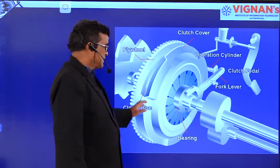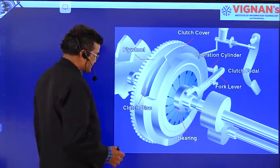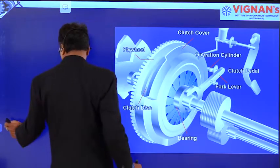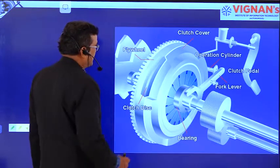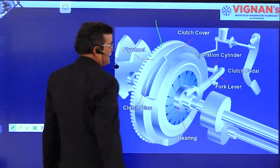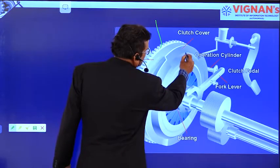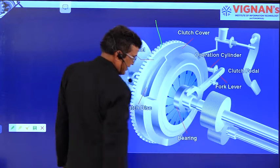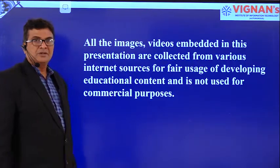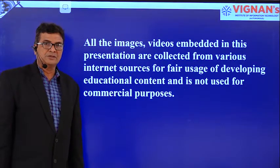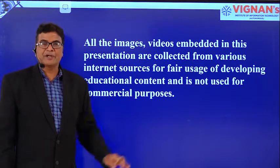This is a 3D view of a clutch assembly. This is the flywheel having a bulk mass. This is the clutch disc, this is the clutch cover, and this is the operating mechanism. This operating mechanism will be discussed in the coming topic. That's all about the operation of the clutch.